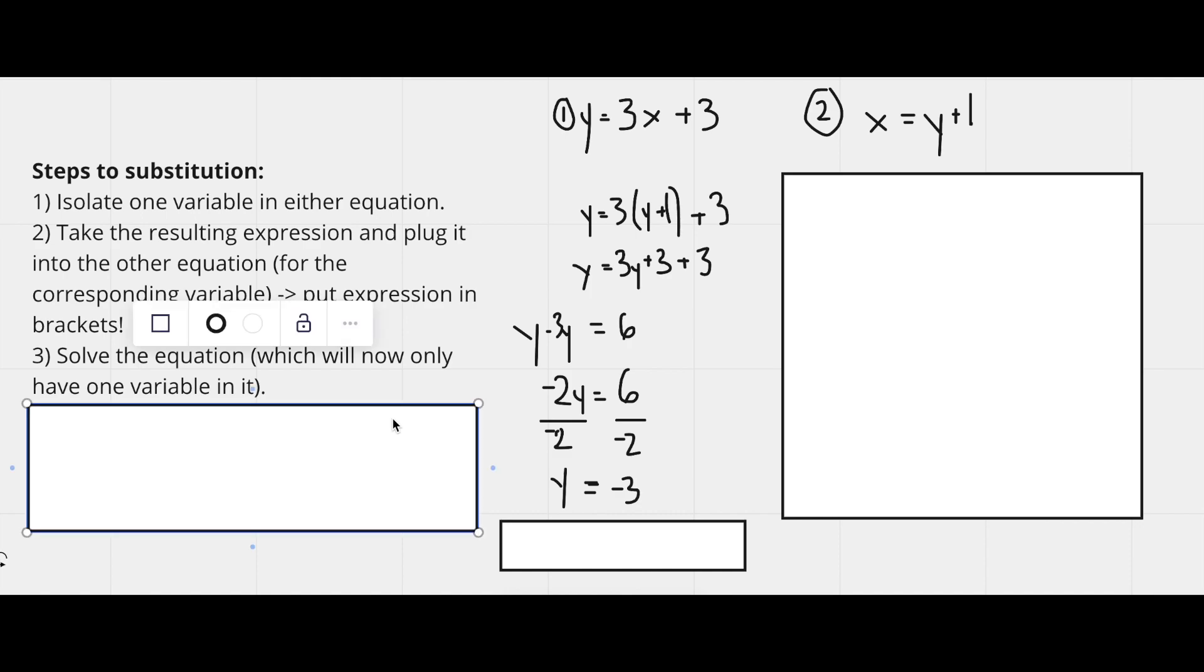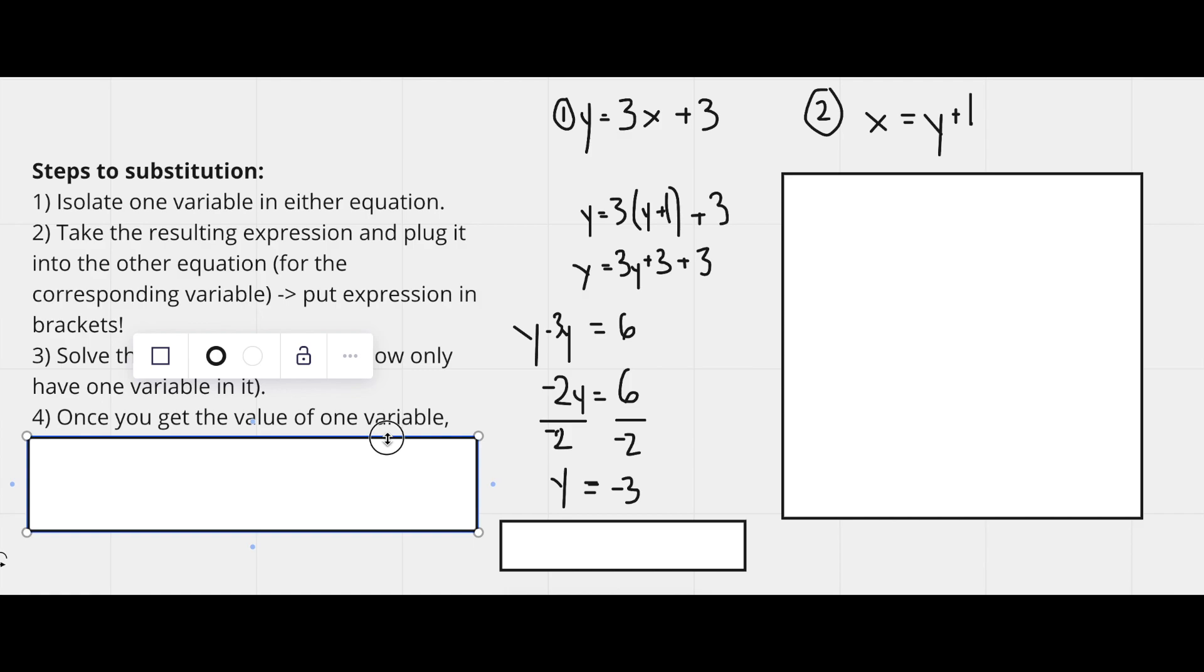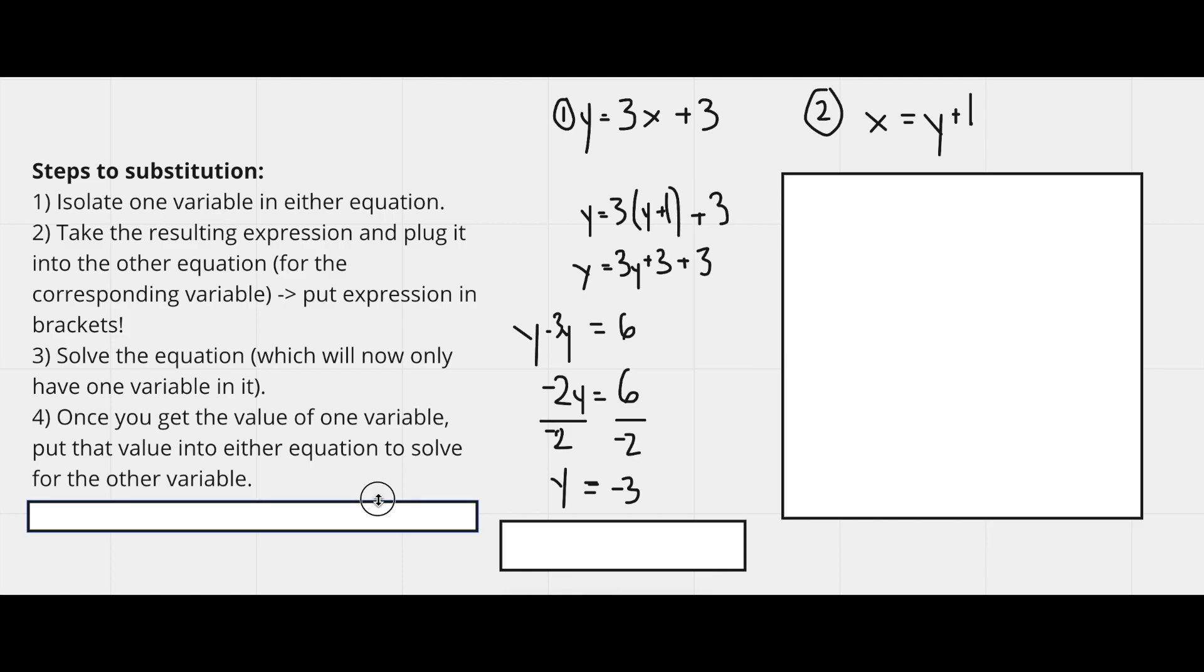Now let's look at the next step. Once you get the value of one variable, which we have right here, y equals negative 3, put that value into either equation to solve for the other variable.